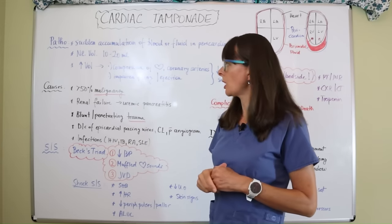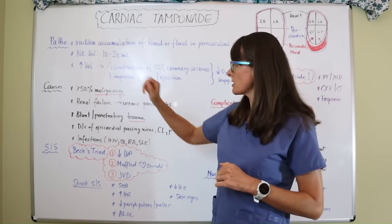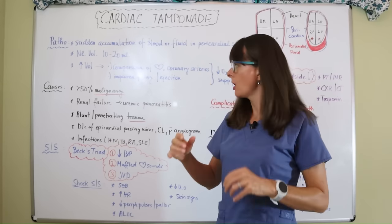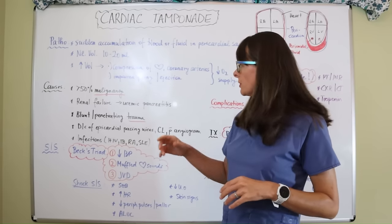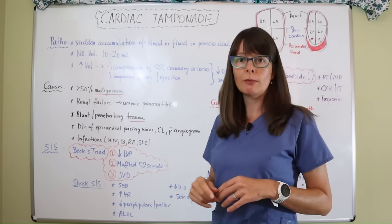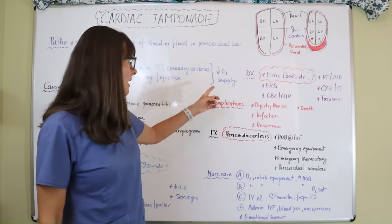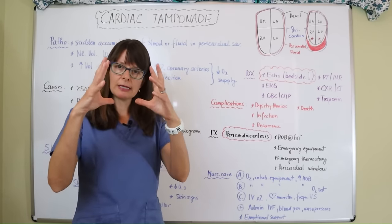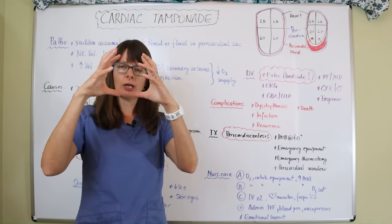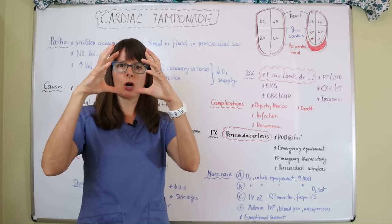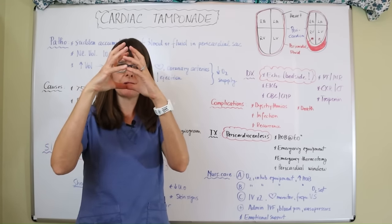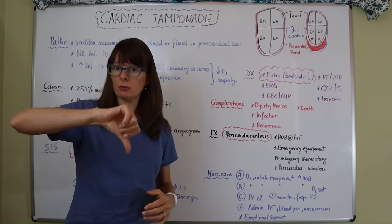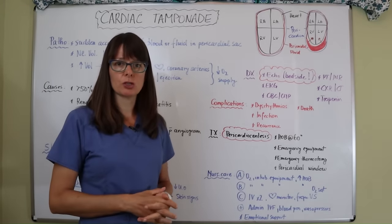Even a small amount of extra fluid can lead to serious problems. This increase in volume causes compression of the heart because the fluid can't escape, compressing the heart itself and the coronary arteries, which leads to impaired filling and ejection ability. This decreases oxygen supply to the entire body. The pericardial layer surrounding the heart prevents it from expanding and contracting normally, decreasing cardiac output.